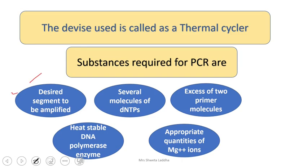So we need the desired gene, molecules of DNTPs (deoxyribonucleotide triphosphates), two primer molecules, Taq polymerase enzyme, and magnesium ions.